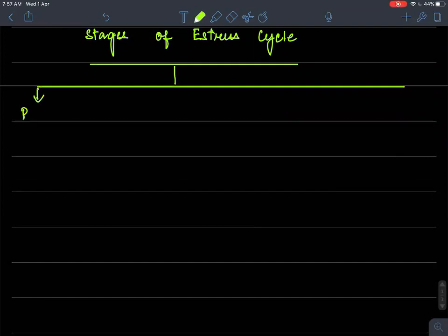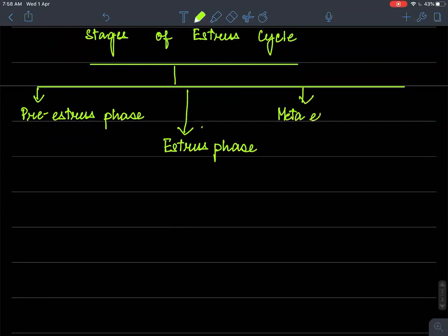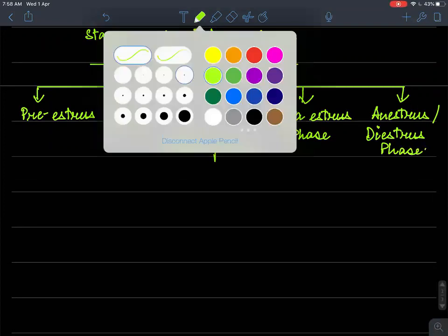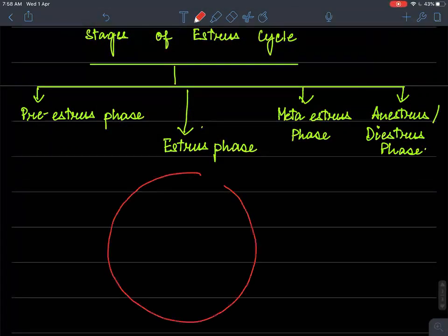The first stage is called as pre-estrus phase. The second stage is called as estrus phase, which is the heat period. The third stage is called as meta-estrus phase. And the last stage is called as anestrus phase. So we can just represent this in the form of a pie chart.